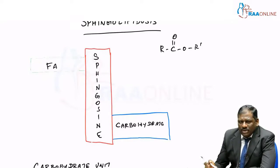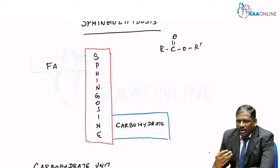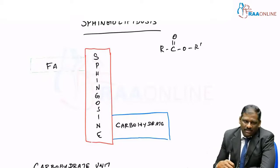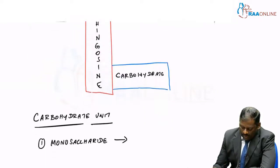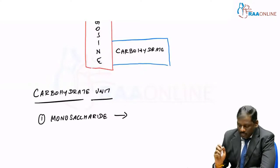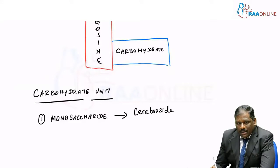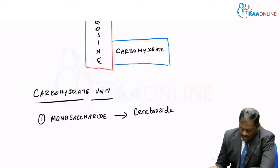As I said before, the carbohydrate units are there. This carbohydrate unit could either be a monosaccharide or this could be an oligosaccharide associated with sialic acid. According to that, the name actually changes. For example, if that carbohydrate unit appears to be a monosaccharide, then this is called as cerebroside.